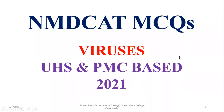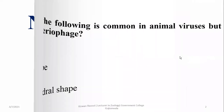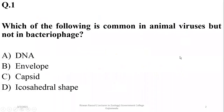Bismillahirrahmanirrahim. This is the NmbKRMSQs 2021 paper on viruses. Question number one: which of the following is common in animal viruses but not in bacteriophages? Animal viruses usually have an envelope, and this is not found among phages.